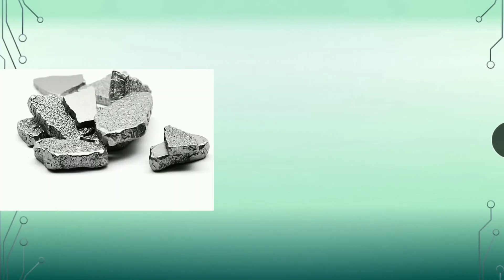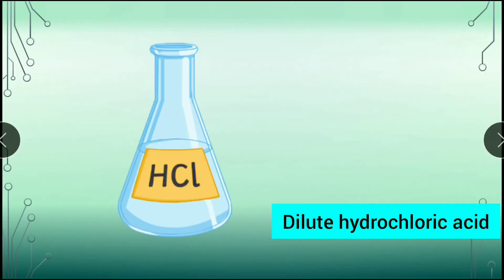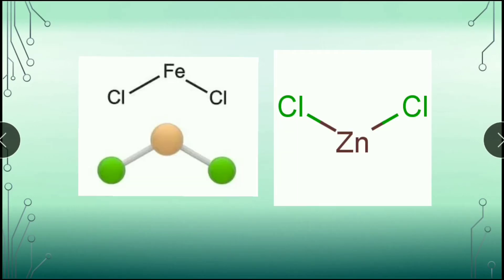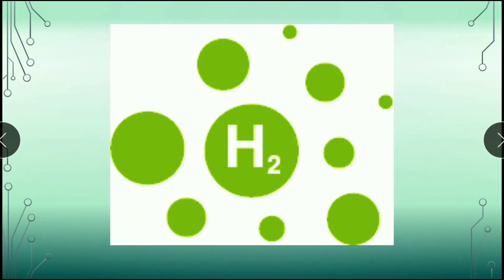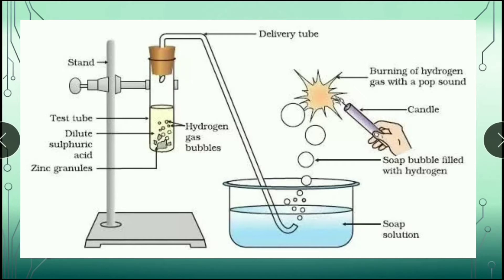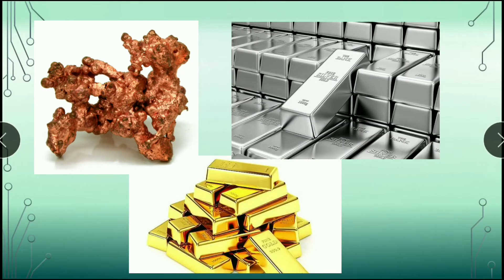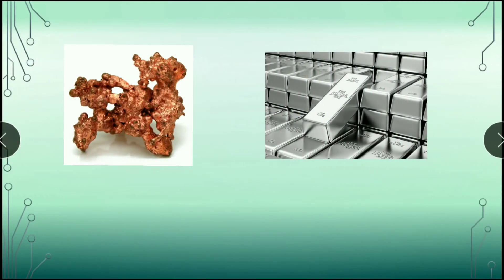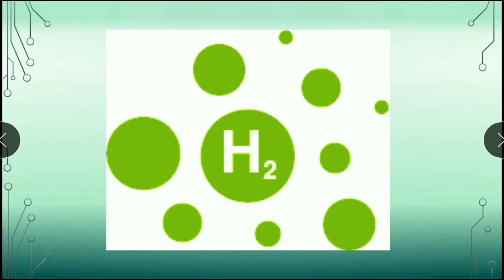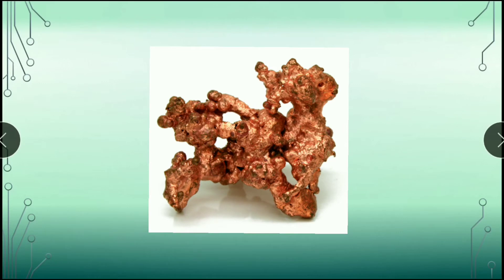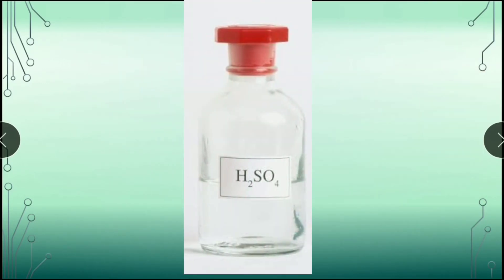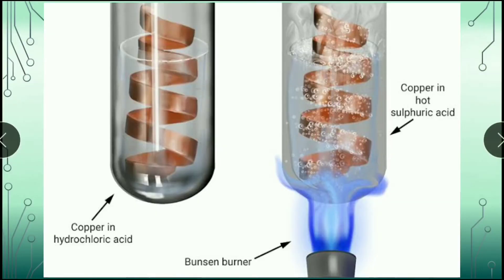Iron and zinc metals also react with dilute HCl to form the corresponding chlorides and hydrogen gas. This hydrogen gas burns with a pop sound when a lighted matchstick is brought near the mouth of the test tube containing metal and dilute hydrochloric acid. The less reactive metals like copper, silver and gold do not react with dilute acids like dilute hydrochloric acid or dilute sulfuric acid. Thus, copper, silver and gold do not produce hydrogen gas with dilute acids. Copper metal, however, reacts with hot and concentrated sulfuric acid, but no hydrogen gas is produced.